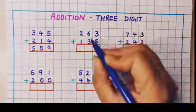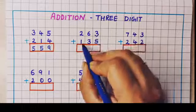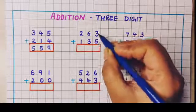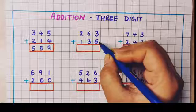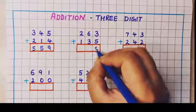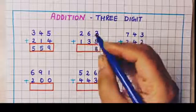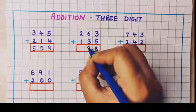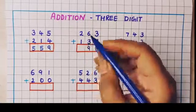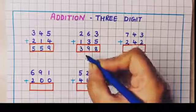Now let's see the next example: 263 plus 135. First we are going to do the addition of 3 plus 5, that is 8. Then 6 plus 3, the answer is 9. And 2 plus 1 is 3. So the answer is 398.